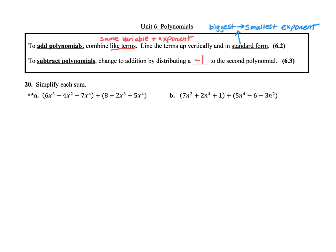The first thing I'm going to do is take that first polynomial and rearrange the terms in standard form. The biggest exponent here is x to the fourth, so that term should come first: negative 7x to the fourth. Then the next biggest exponent is x cubed, so I'm going to put the 6x cubed next. And lastly, we have the minus 4x squared. Now if we take our second polynomial and do the same thing, my biggest exponent is x to the fourth, so the 5x to the fourth is going to go right below the negative 7x to the fourth, so that the like terms are lined up vertically.